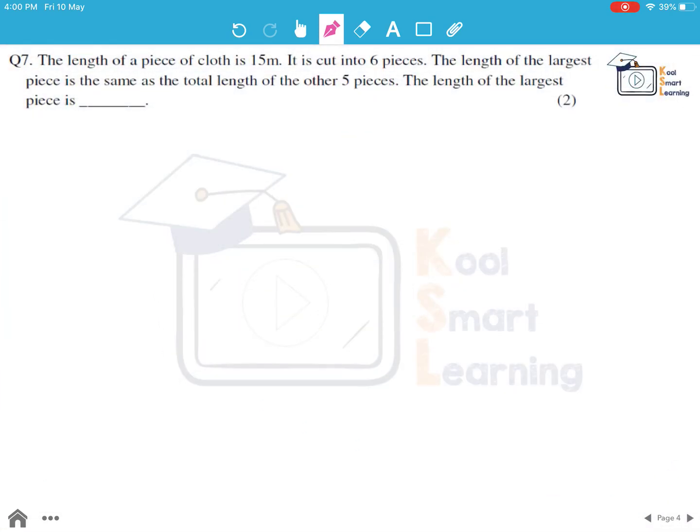Moving on to the next question. The length of a piece of cloth is 15 meter. It is cut into 6 pieces. The length of the largest piece is same as the total length of the other 5 pieces. Find the length of the largest piece.